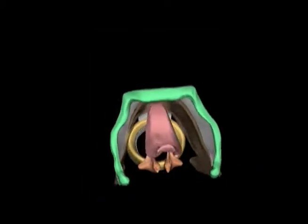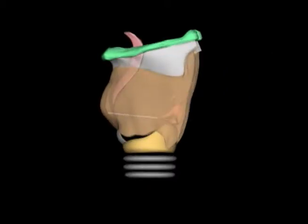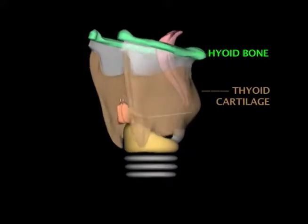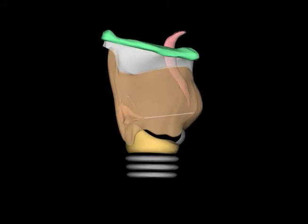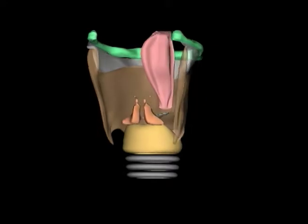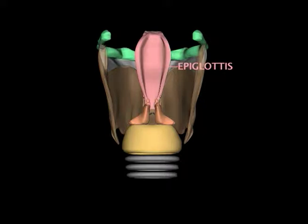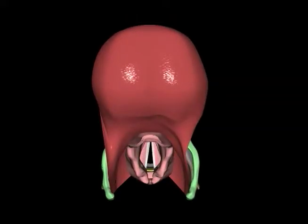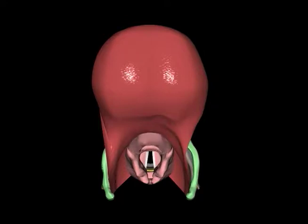The laryngeal skeleton gives the larynx rigidity and support. It's principally formed by the hyoid bone and the thyroid and cricoid cartilages. Attached anteriorly to the inside of the thyroid cartilage is the epiglottis, a curved, leaf-shaped structure. Its upper rounded edge projects into the pharynx just behind the tongue. The stalk at the base of the epiglottis allows it to swing up and down over the laryngeal outlet, opening and closing it like a trap door. The depression between the epiglottis and the tongue is called the vallecula.